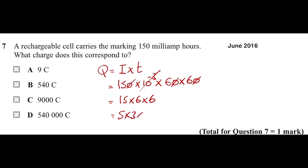15 is 5 × 3, times 6 times 6. That equals 6 × 5, which is 30, times 3 times 6, which is 90 times 6 overall, which is 540 coulombs. The correct answer is B.